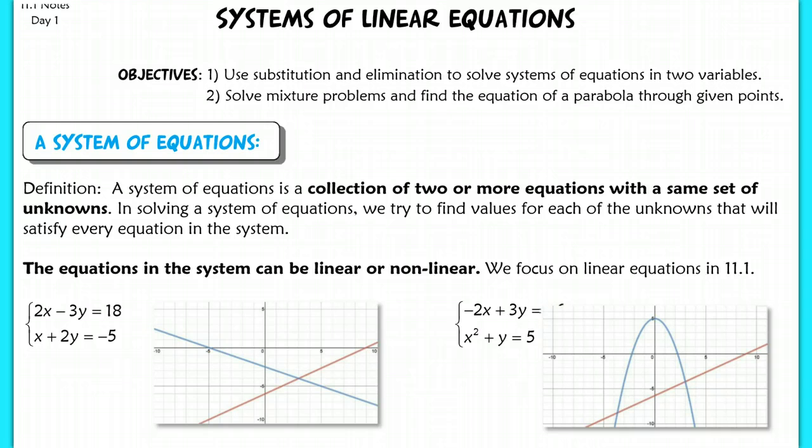So this is a little bit of review for you guys, but this is going to go more in-depth and be a little bit more difficult than what you're used to seeing from Algebra 1. So let's review and define a system. A system of equations is just a collection of two or more equations with the same set of unknowns. When you're solving a system, you're looking for the values for which each of your unknowns will satisfy every equation in the system.